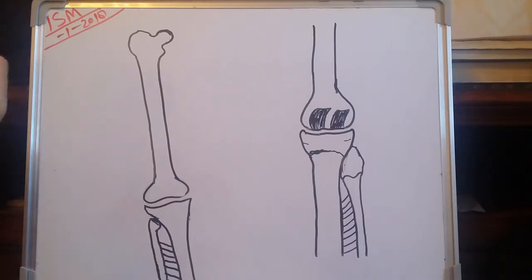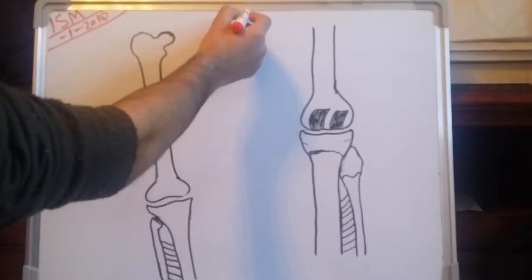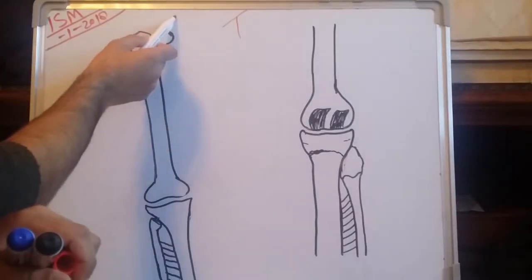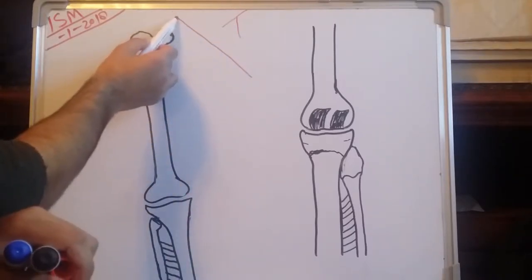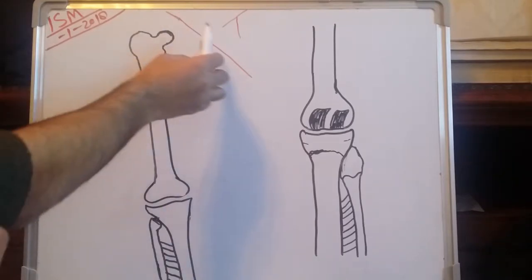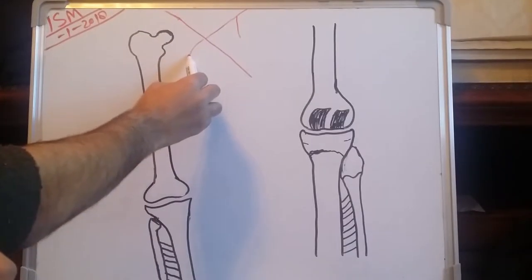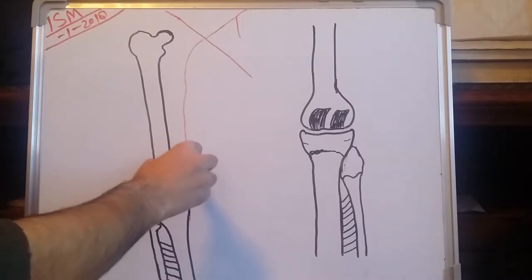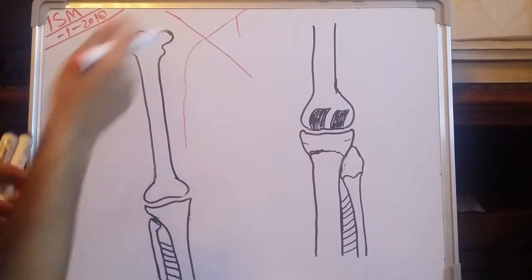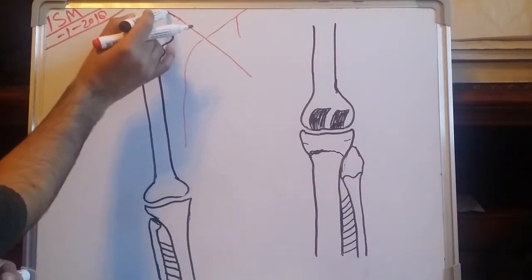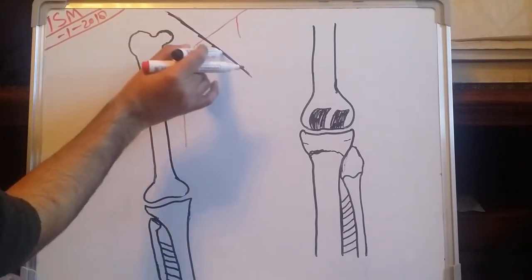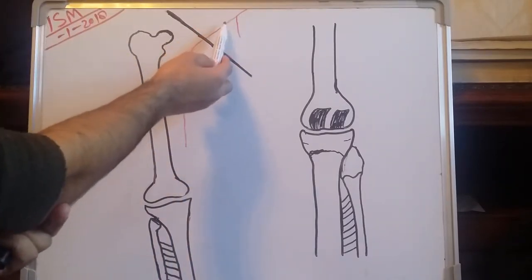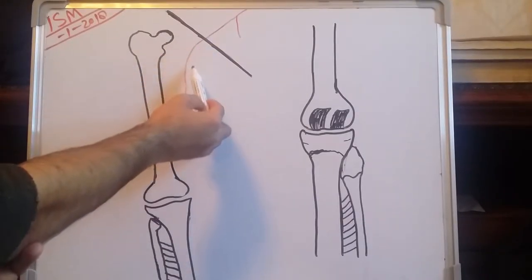As we know, the iliac artery divides into two branches: one is the external iliac artery and the other is the internal iliac artery. After the inguinal ligament, this external iliac artery is called the femoral artery.